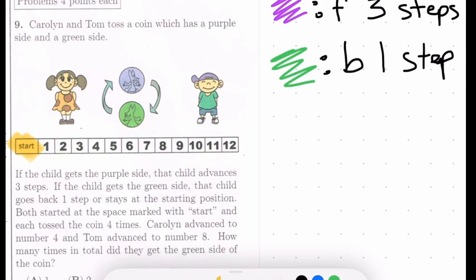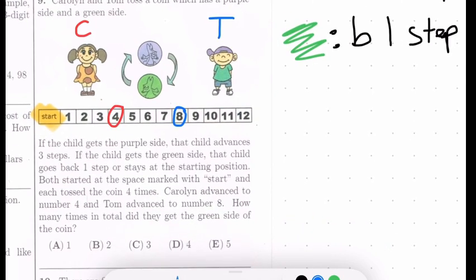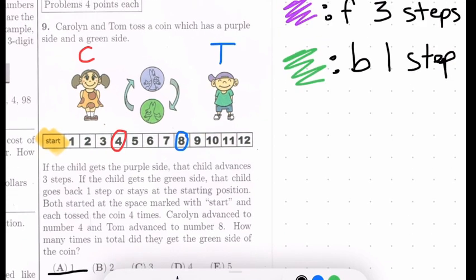How many times in total did they get the green side of the coin? This is a problem where it's important to write things down. If you get purple, you go forward three steps. If you get green, you go back one step, or if you're already at the starting position you stay there. Both of them started at start, and each tossed the coin four times. Caroline got to number 4, let's make her red, and we'll make Tom blue.